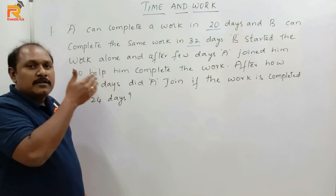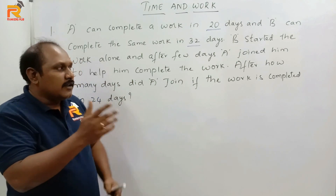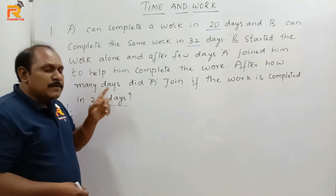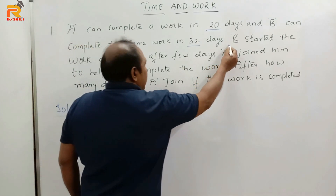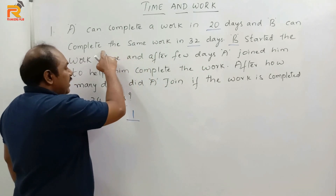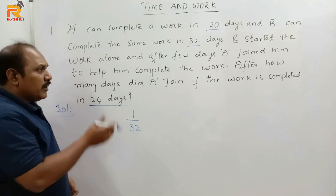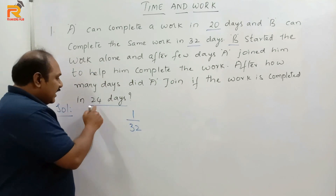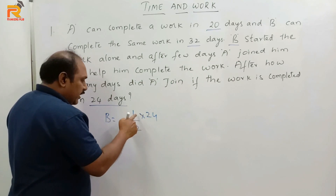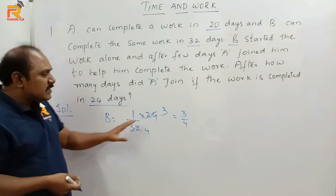Let us try to understand. B started the work and A joined after few days, so A and B are working together till the work is completed. The total work is completed in 24 days. B is the person working from the first day till the last day. B's one day work is 1/32. He worked all 24 days, so the work done by B in 24 days is 24/32, which simplifies to 3/4. So in all 24 days, B has done 3/4 of the work.